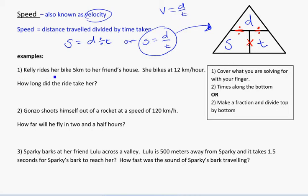So, Kelly rides her bike 5 kilometers to her friend's house. So 5 kilometers, that's D equals 5. That's my distance. She bikes at 12 kilometers per hour. Well, that's a speed. You might think about being in your car and your parents are driving at 50 kilometers per hour. So 12 here, this is the speed, equals 12. How long did the ride take her? So how long? Well, that's saying the time. I want to know time.